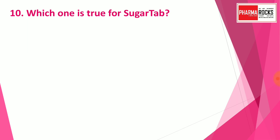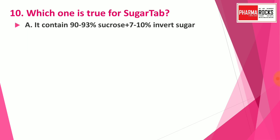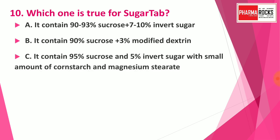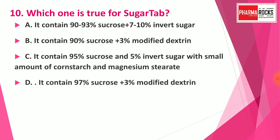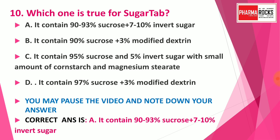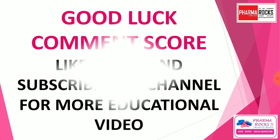Question number ten: Which one is true for Sugar Tab? Option A: 90 to 93% sucrose and 7 to 10% invert sugar. Option B: 90% sucrose and 3% modified dextrin. Option C: 95% sucrose and 5% invert sugar with small amounts of corn starch and magnesium stearate. Option D: 97% sucrose and 3% modified dextrin. The correct answer is Option A: it contains 90 to 93% sucrose and 7 to 10% invert sugar.